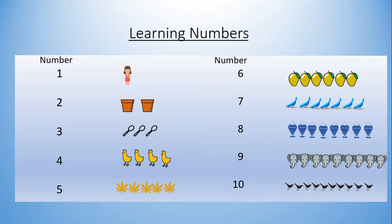Four: let's count how many chickens are here — one, two, three, four — four chickens. Five: one, two, three, four, five — five flowers. Six: how many mangoes are here? One, two, three, four, five, six — six mangoes.